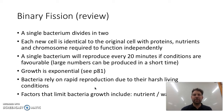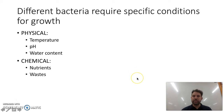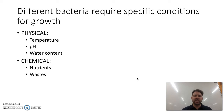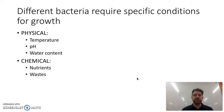They can reproduce every 20 minutes if the conditions are right. They need this rapid reproduction because they live in harsh conditions, and their growth can be limited by things like nutrient and water availability. Different bacteria require different conditions. Some specific physical conditions are temperature, pH, or water content, and some chemical conditions are nutrients and wastes.